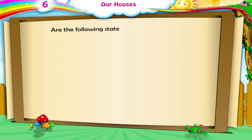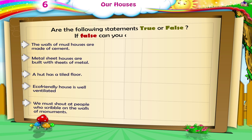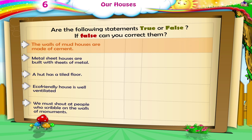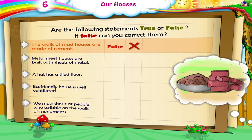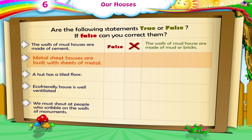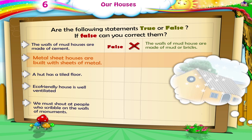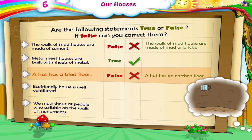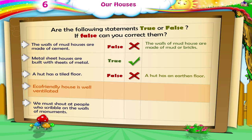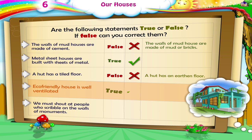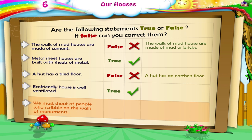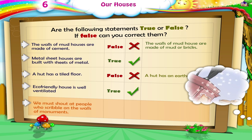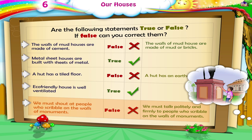Are the following statements true or false? If false, correct them. The walls of mud houses are made of cement — False. The walls of mud houses are made of mud or bricks. Metal sheet houses are built with sheets of metal — True. A hut has a tiled floor — False. A hut has an earthen floor. An eco-friendly house is well ventilated — True. We must shout at people who scribble on the walls of monuments — False. We must talk politely and firmly to people who scribble on the walls of monuments.